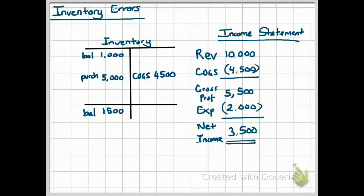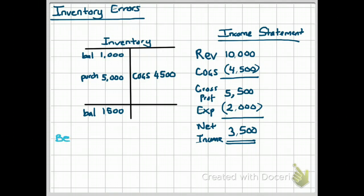In the earlier video, we took a look at errors in your ending inventory. Now let's look at errors in your beginning inventory. This time, we're going to assume that our beginning inventory was overstated.